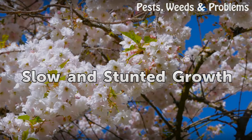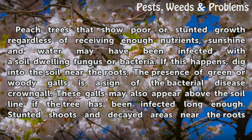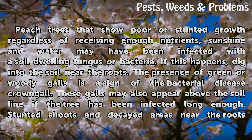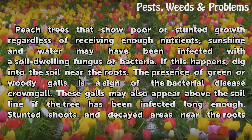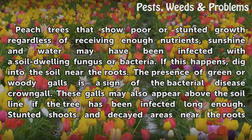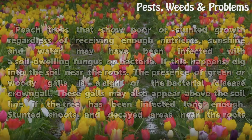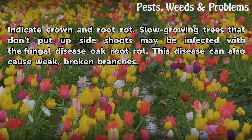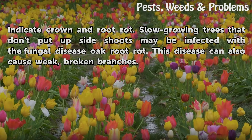Slow and Stunted Growth. Peach trees that show poor or stunted growth regardless of receiving enough nutrients, sunshine, and water may have been infected with a soil-dwelling fungus or bacteria. If this happens, dig into the soil near the roots. A presence of green or woody galls is a sign of the bacterial disease crown gall. These galls may also appear above the soil line if the tree has been infected long enough. Stunted shoots near the roots indicate crown and root rot. Slow-growing trees that don't put up side shoots may be infected with the fungal disease oak root rot. This disease can also cause weak, broken branches.